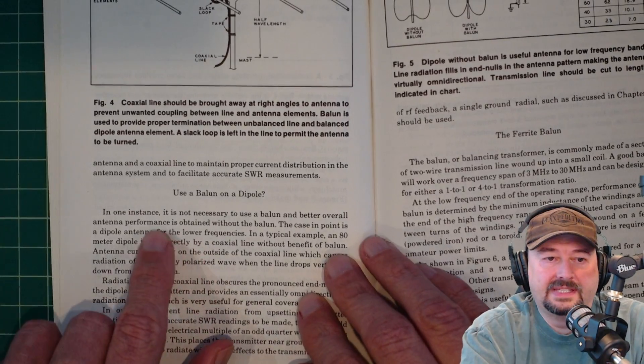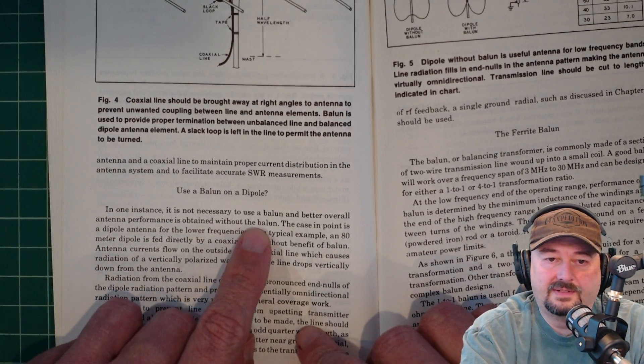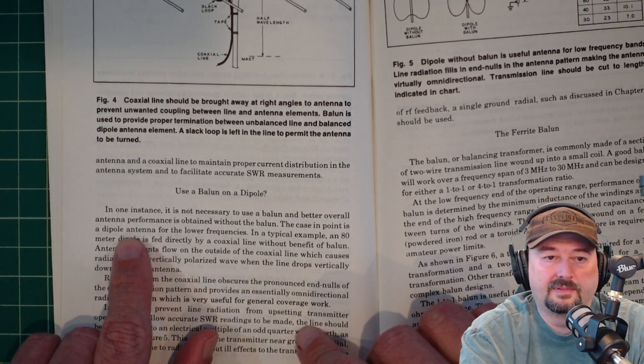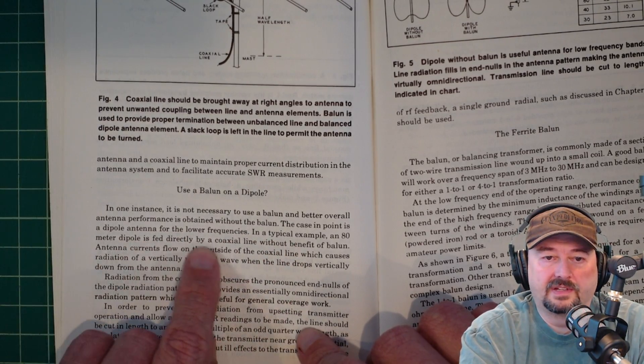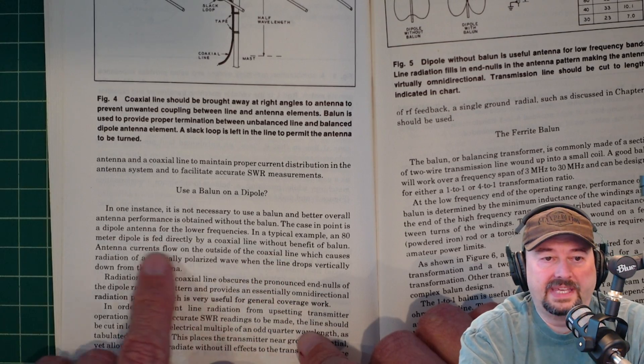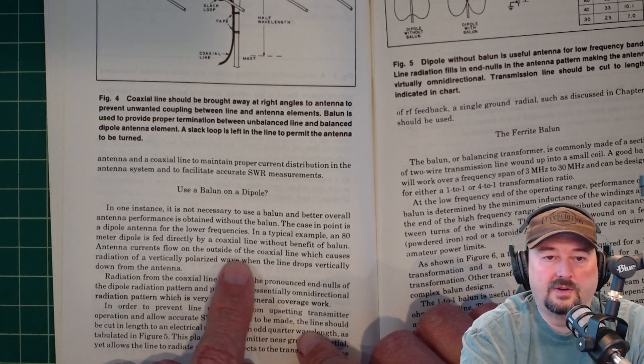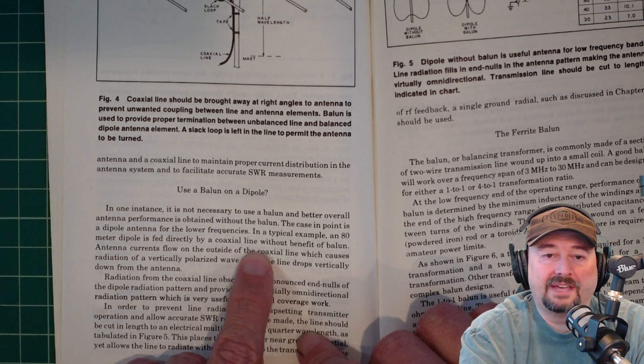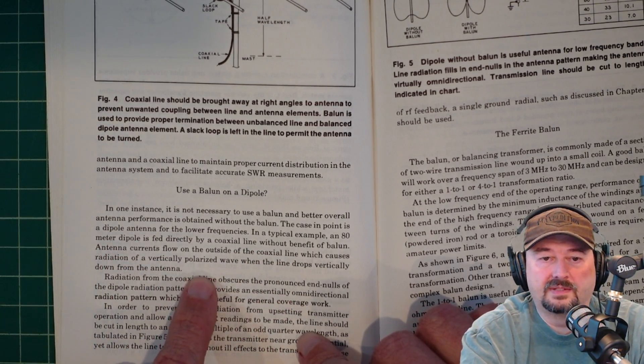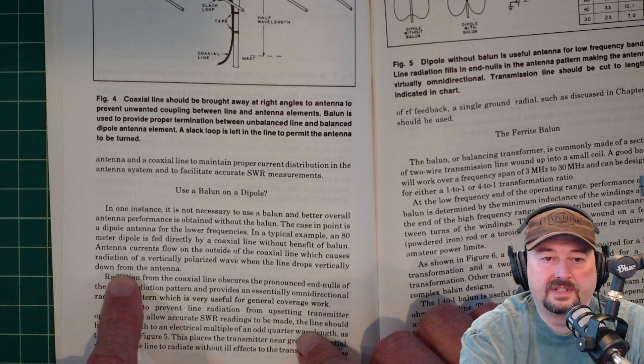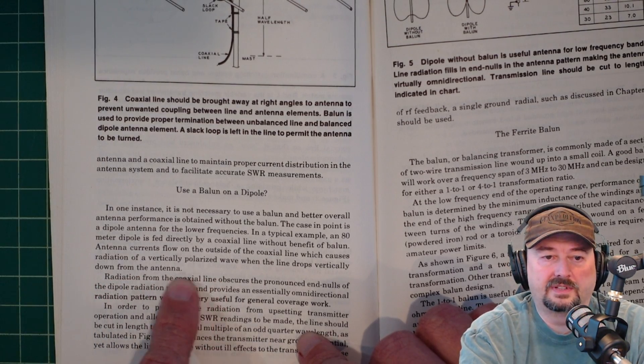And so what he says here is, in one instance, it is not necessary to use a balun and better overall antenna performance is obtained without the balun. The case in point is the dipole antenna for the lower frequencies. In the typical example, the 80-meter dipole fed directly by a coaxial line will benefit without the benefit of a balun. Antenna currents flow on the outside of the coaxial line, which causes the radiation of a vertically polarized wave and then drops the vertically down the antenna.